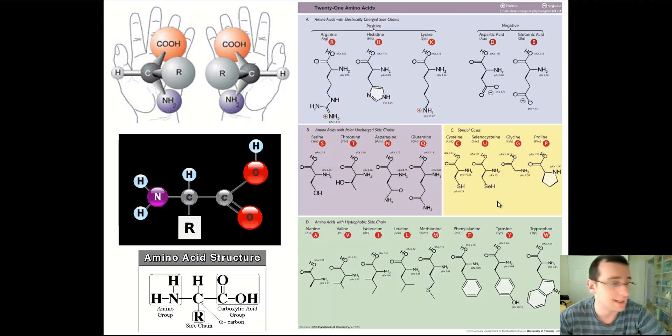An amino acid has a central carbon surrounded by a hydrogen, a side chain, an amino group, and a carboxyl group. In humans, there are 20 different kinds of amino acids, which are different kinds of side chains, which is what makes the difference between them.